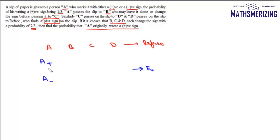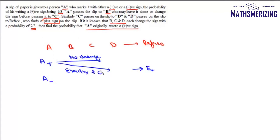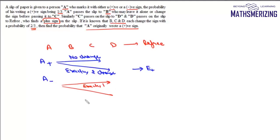If A starts with plus, a positive sign reaches the referee in two cases: Case 1 — none of B, C, D change the sign, so it stays positive; or exactly two of them change the sign, say B and C, C and D, or B and D, which also results in a plus. If A starts with minus, a positive sign results in two cases: Case 1 — exactly one of B, C, D changes the sign; or Case 2 — all three change the sign. These are the four cases possible.